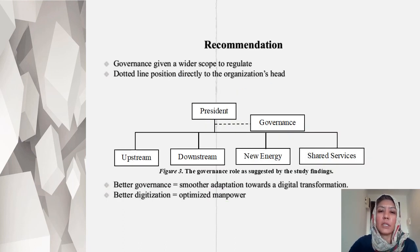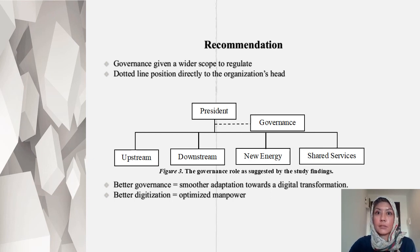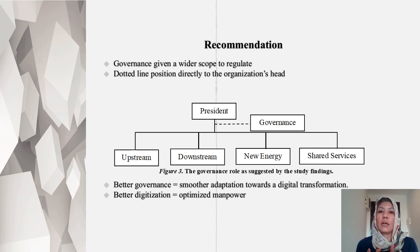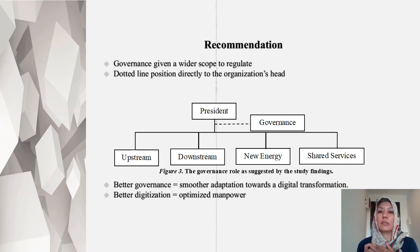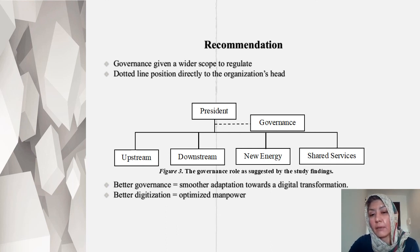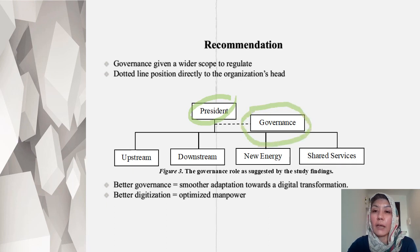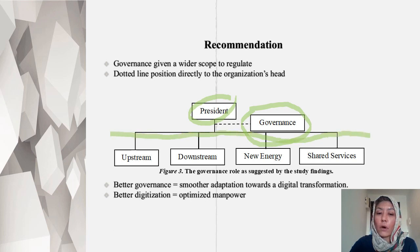Out of this study, what we can recommend is that governance should be given a wider scope to regulate the organization, so that you can have a unified approach and a unified outcome when it comes to digitization, optimizing the organization, or optimizing the resource. For instance, if the company has a president, governance should be given the dotted line right below the president, so that they will give a helicopter view of all the different business units in the organization.